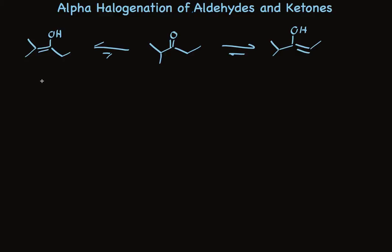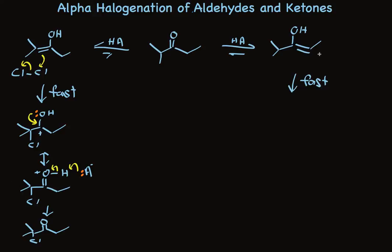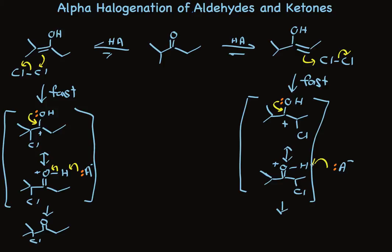It's the enol itself, not the ketone, that undergoes reaction with the halogen. Once an enol is formed, it reacts rapidly with halogen — the same kind of arrow-pushing mechanism we saw for alkenes. In fact, enols are very reactive alkenes. This places a positive charge on carbon that is resonance stabilized, and this is just a proton loss away from the halogenated ketone. The other enol reacts in the very same way. It's the relative rates of formation of these two enols which determines the product ratio of alpha halogenation on one side or the other. More highly substituted double bonds are more stable and more easily formed.